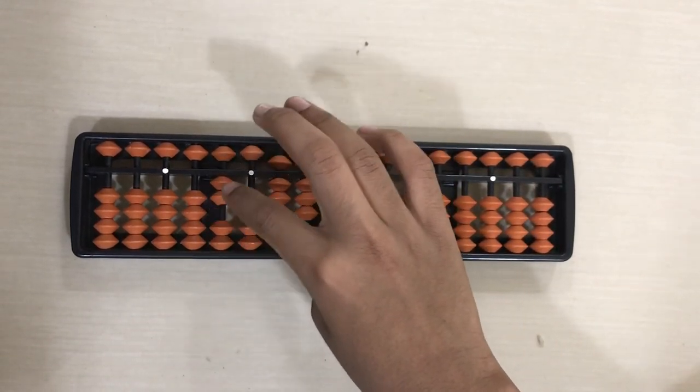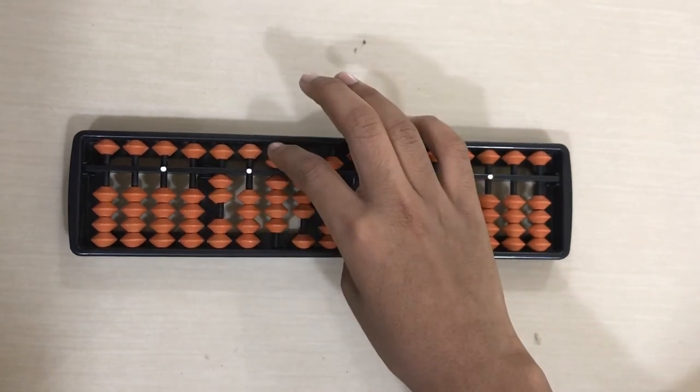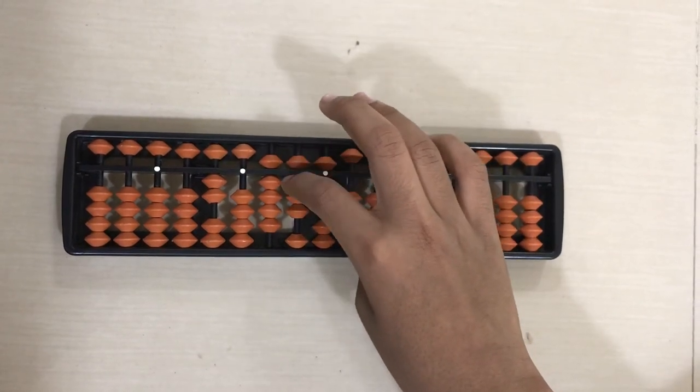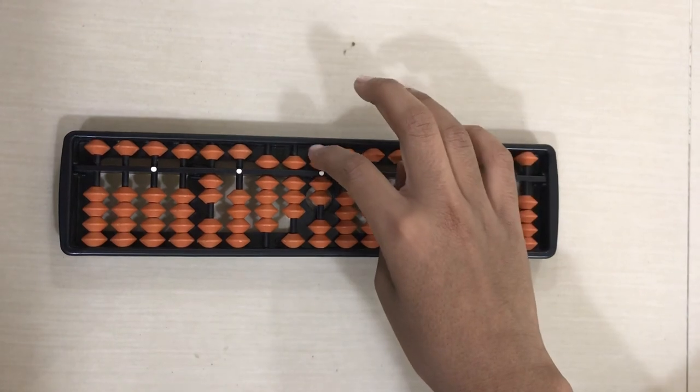Ten thousands place, two, which is twenty thousand. Thousand, five, six, seven, eight, nine, nine hundred and eighty-seven.